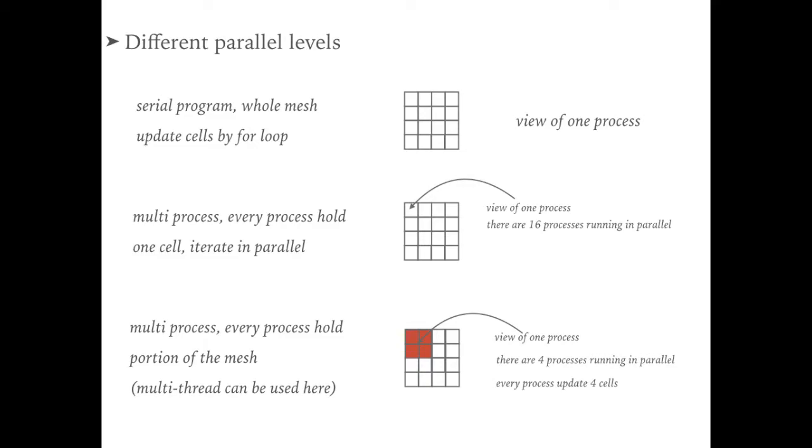For the third case, every process holds multiple cells, and we call them a data block. For example here, every block contains four cells. There are four processes, and every process can update values in the corresponding data block.